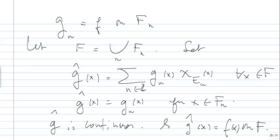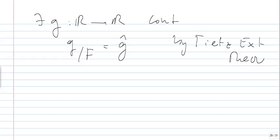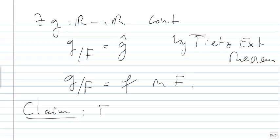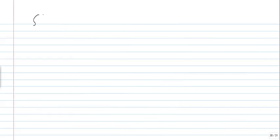Using Tietze's theorem again, there exists G from R to R continuous such that G restricted to F equals G-hat, which equals F on F. So we have the same conclusion. The theorem would be complete if we prove that F is actually closed — not just an F-sigma — and this is very interesting.